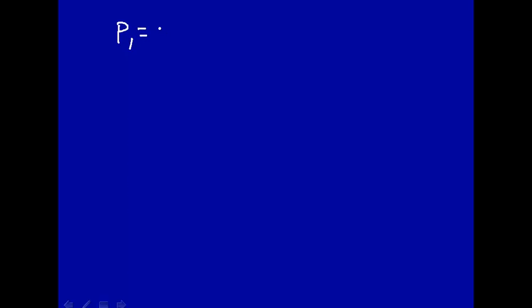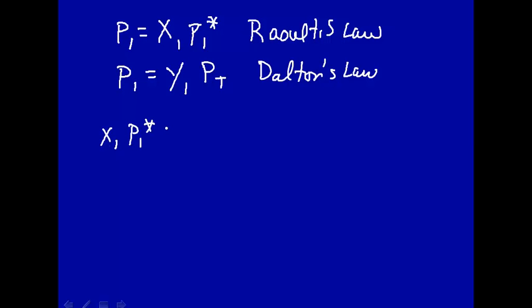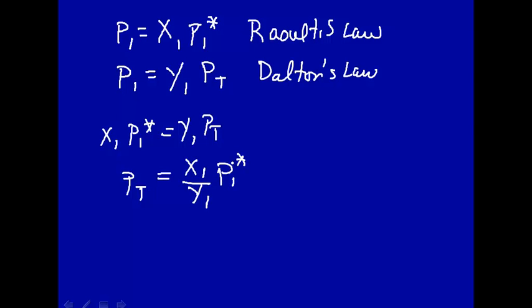We know that the pressure of component 1 above the solution equals the mole fraction in the solution times the vapor pressure of pure 1 — that's Raoult's law. We also know that the vapor pressure of component 1 above the solution equals the mole fraction in the vapor times the total pressure — that's Dalton's law. Both equal the partial pressure of component 1, so x₁p₁* = y₁P_total. Therefore, total pressure equals (x₁/y₁)p₁*. If we can express x as a function of y, total pressure becomes a function of y alone.